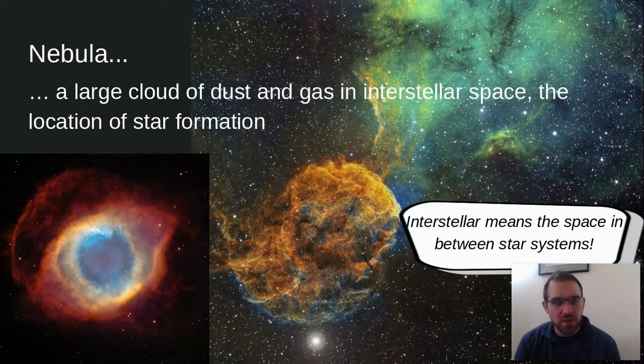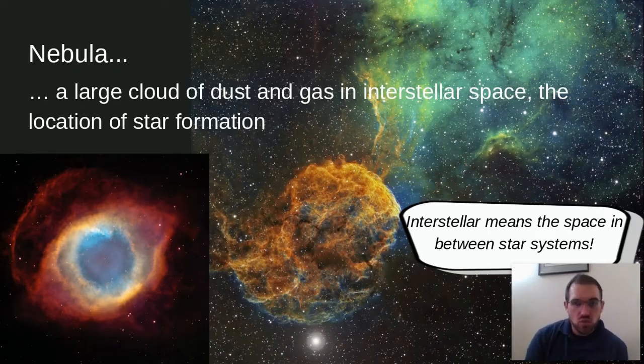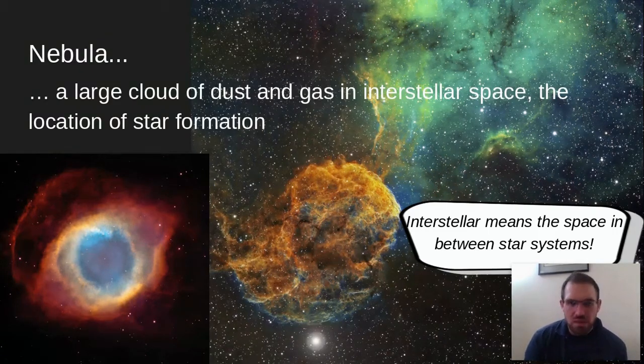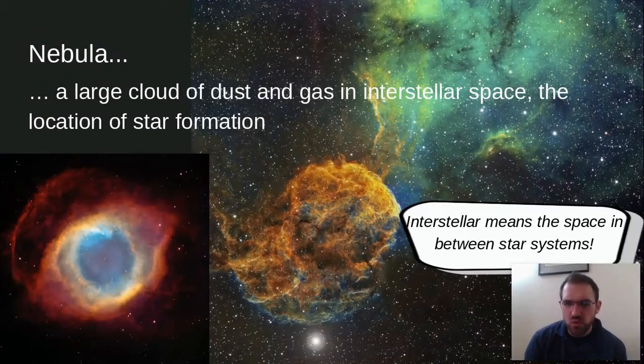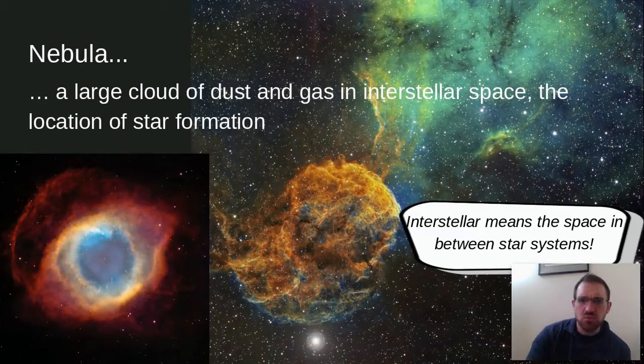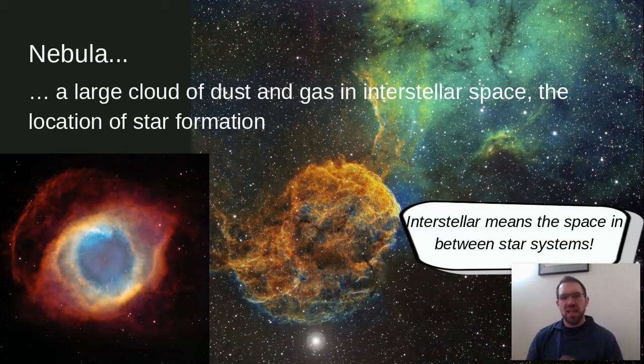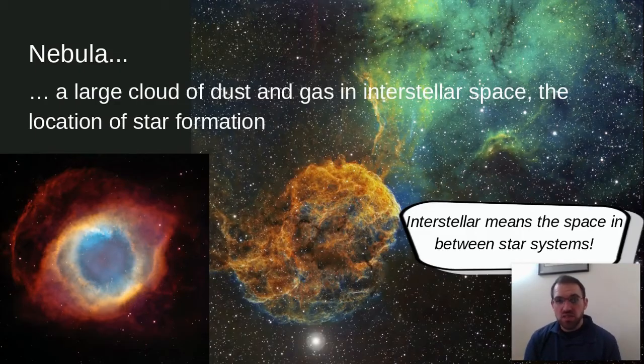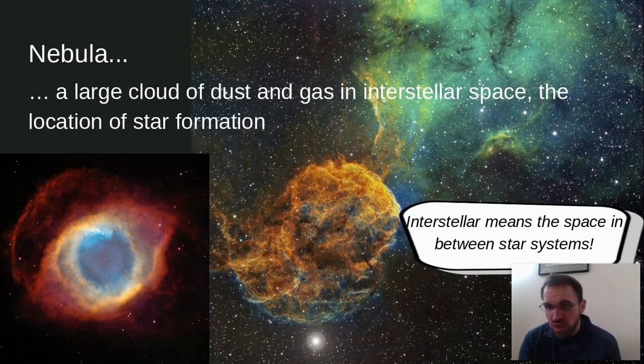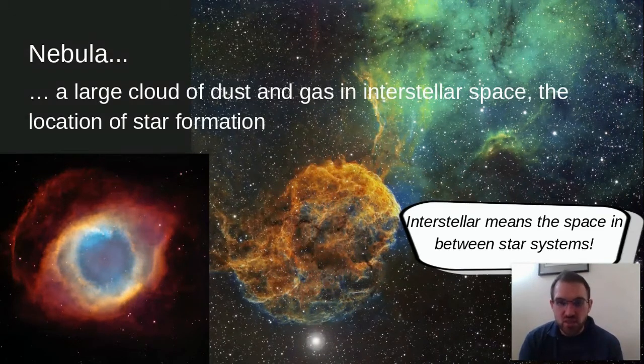So a nebula is a large cloud of dust and gas in interstellar space, and it's the location of star formation. So stars come from somewhere. This is kind of like almost like baby galaxies. This is where galaxies form. There is a really famous image called the Pillars of Creation. It looks kind of similar to this one over here. It just shows these massive clouds. And inside, this is where all these stars are being formed. Sometimes they're called stellar nurseries because, you know, nursery is where babies are taken care of. And stellar has to do with stars.